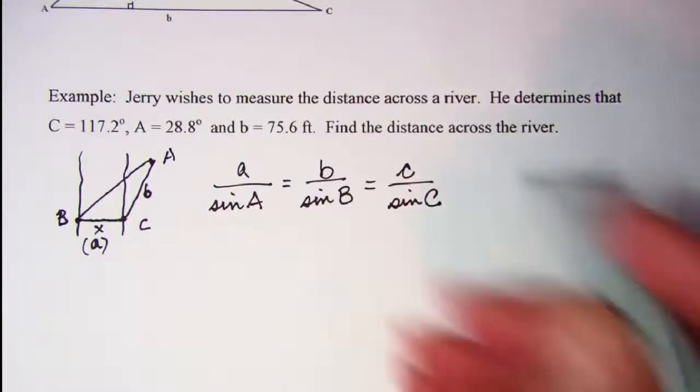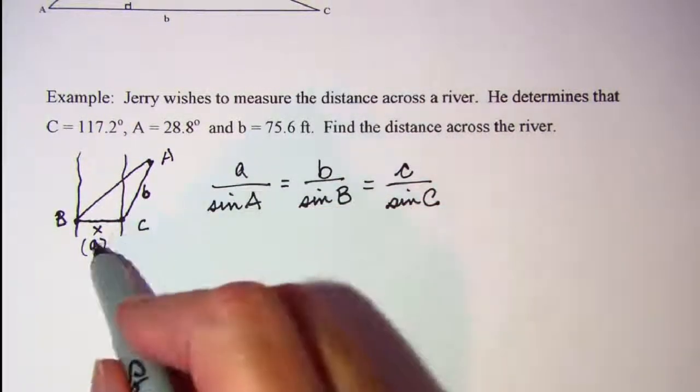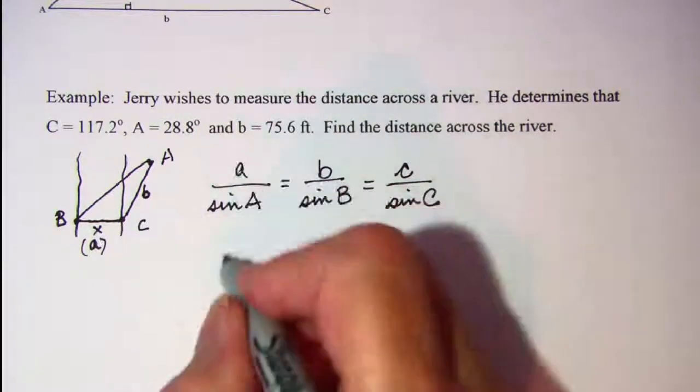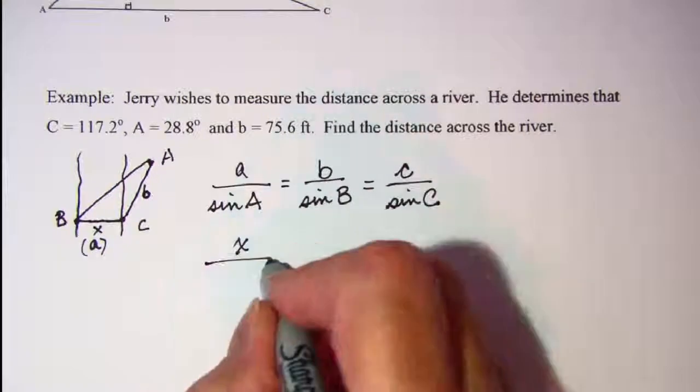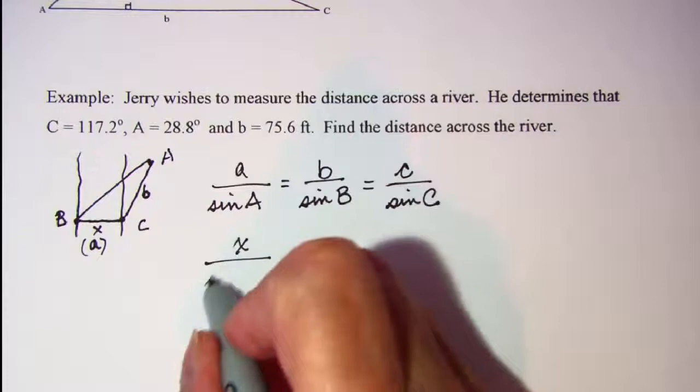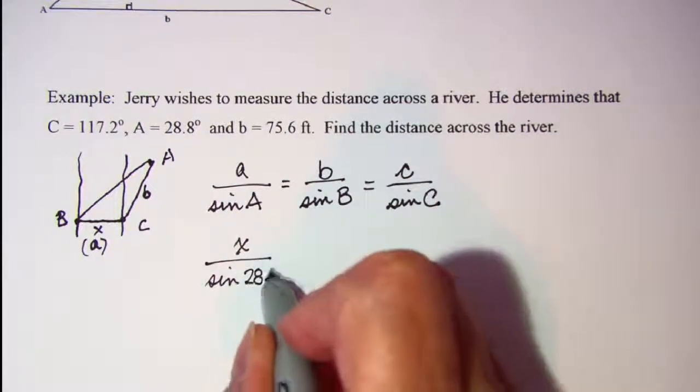Let me see if I can make more sense out of that for you. Our A was actually this distance that we're looking for, so I'm going to put an X there. Angle A is 28.8, so I have sine of 28.8.